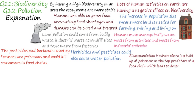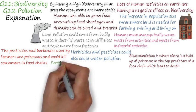Herbicides and pesticides could also cause water pollution and could have bioaccumulation effects on aquatic life too. Bioaccumulation is where there is a build-up of poisons in the top predators of the food chain. This build-up means that top predators could die and not even be able to breed.